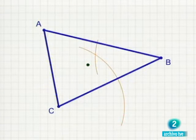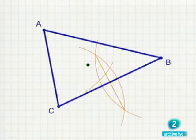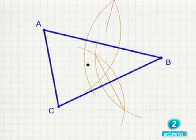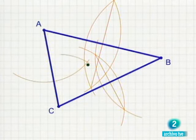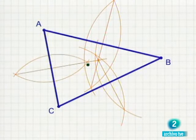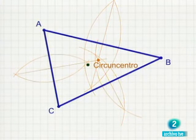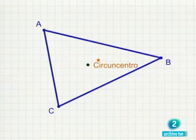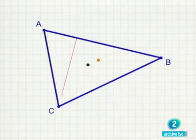Algo similar pasa con las rectas perpendiculares a cada lado que pasan por el punto medio, las mediatrices. Se cortan también en otro punto, el circuncentro. Ya no nos sorprende que las tres alturas también se corten en otro punto, el ortocentro.